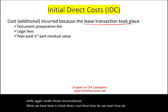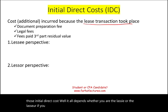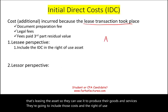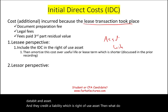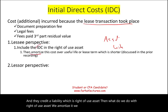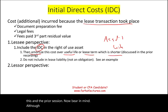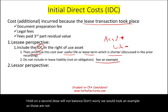How do we handle those initial direct costs? It depends on whether you are the lessee or the lessor. If you're the lessee — the renter who leases the asset to produce goods and services — you include those costs in the right-of-use asset. You debit the asset and credit the liability. Then you amortize the right-of-use asset, with the IDC included, over the useful life or the lease term, whichever is shorter. Note that the IDC is included in the asset, but it is not included in the liability.